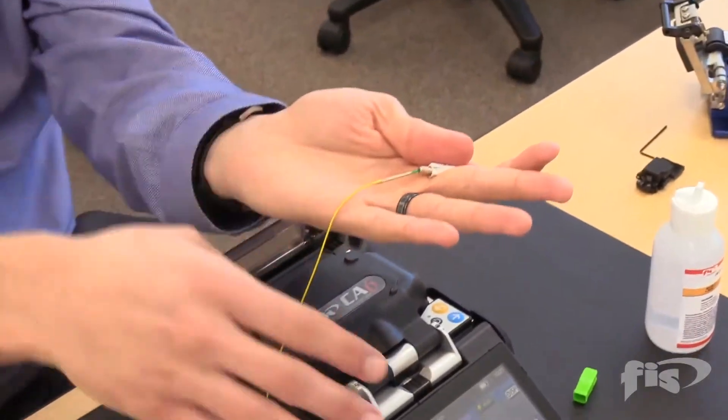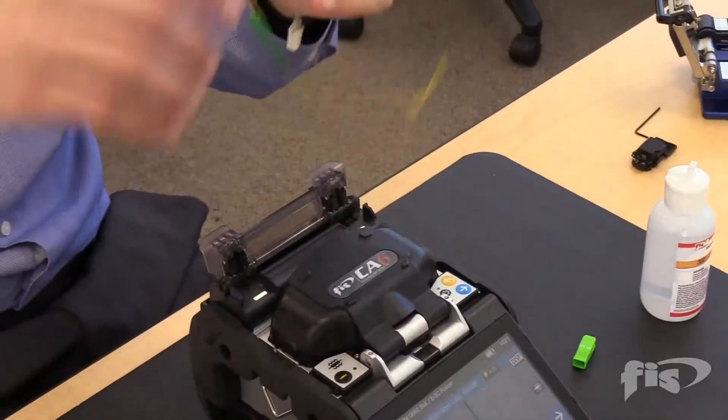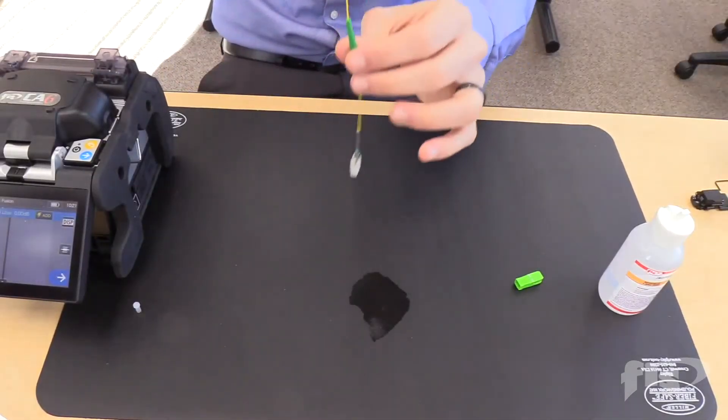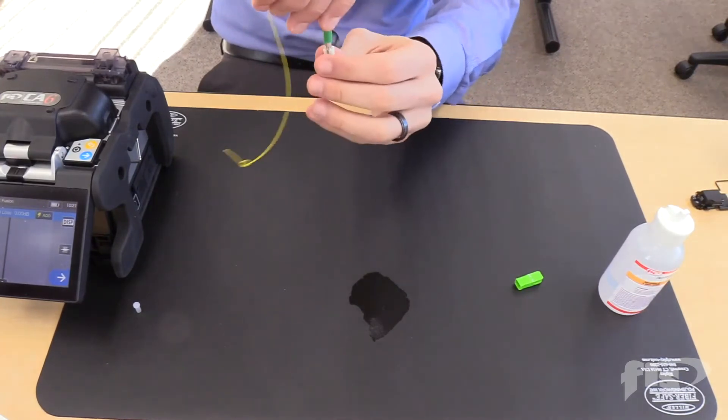Make sure you have an even melt along the splice sleeve prior to sliding the boot up. Slide the boot up over to the back body of the connector.